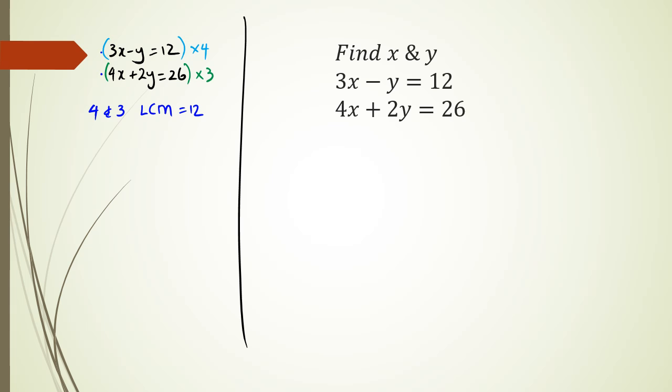So first off, 3x times 4 is going to be 12x, and negative y times 4 is negative 4y, and 12 times 4 is 48. And as for the bottom equation, I have 4x times 3, which is 12x, 2y times 3, which is 6y, and 26 times 3, which is 78.